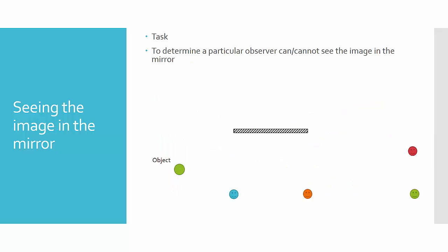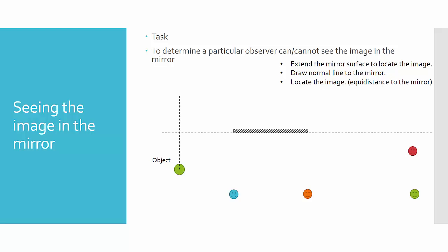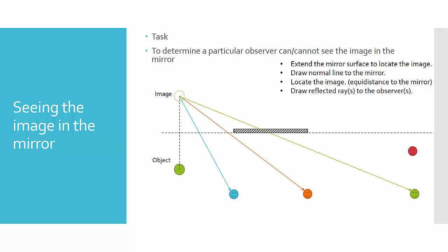Another frequent type of question is to determine whether a particular observer can or cannot see the image in the mirror. You can use the previous method to establish a zone and determine where each observer can or cannot see. But a quicker way is to do this: it's the same — extend the mirror surface, locate the image, and then draw the reflected rays to the observers. From the reflected rays, you can actually establish whether each observer can or cannot see.